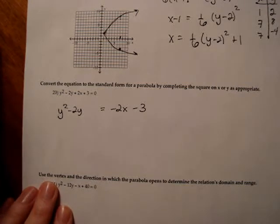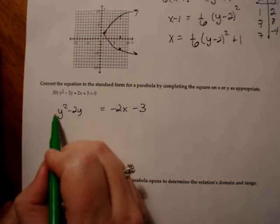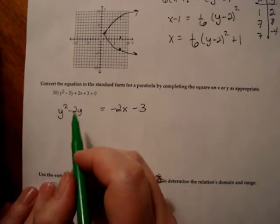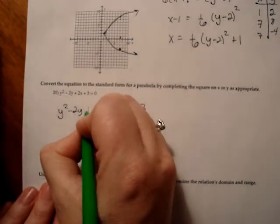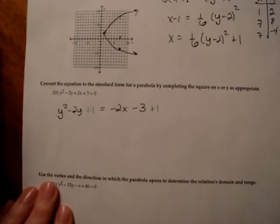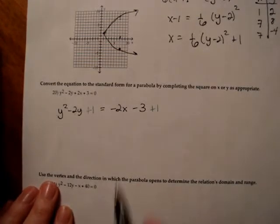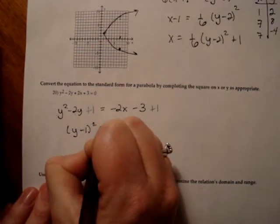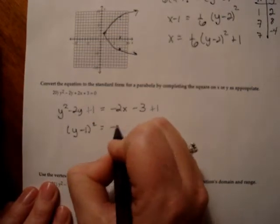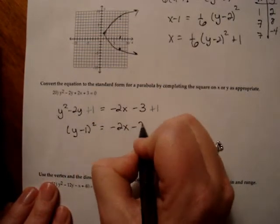Now we want to think about what our magic number is. So I'm going to add, first I check, there's nothing in front of the y squared, that's good. 2 divided by 2 is 1, 1 squared is 1, so I add 1 to the right and left of this equation. And now I know that this will factor into y minus 1 quantity squared is equal to negative 2x minus 2.